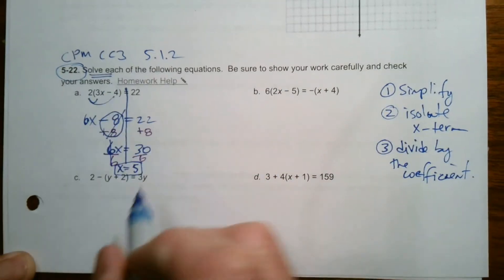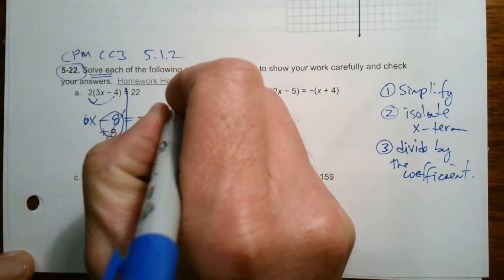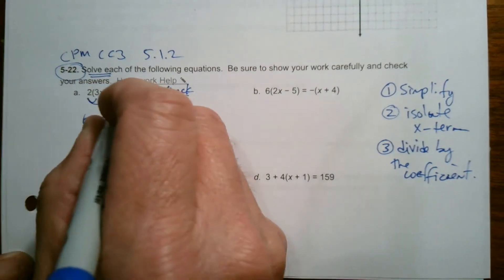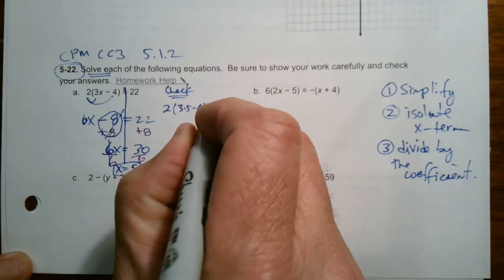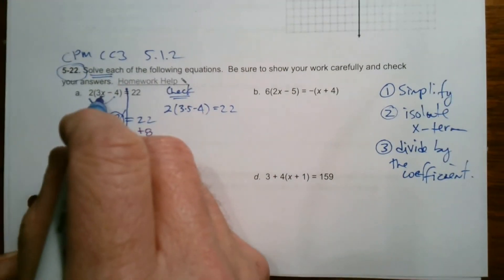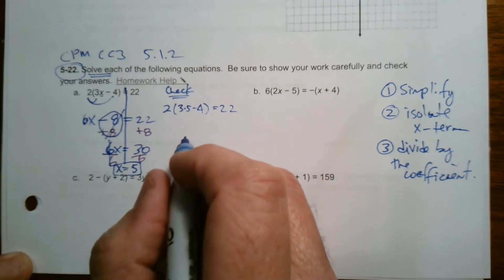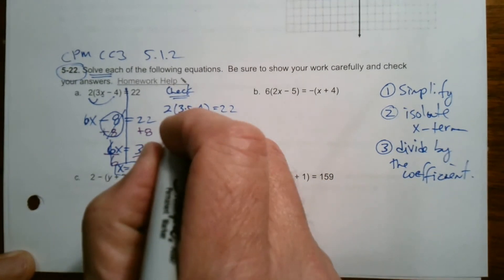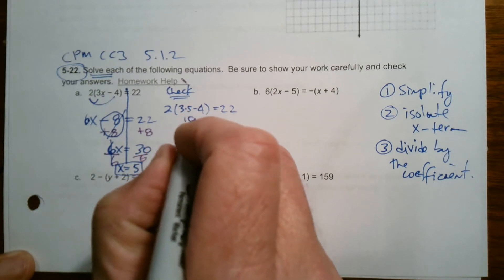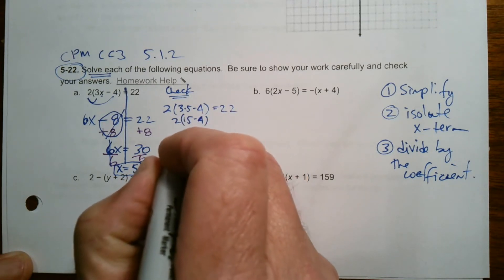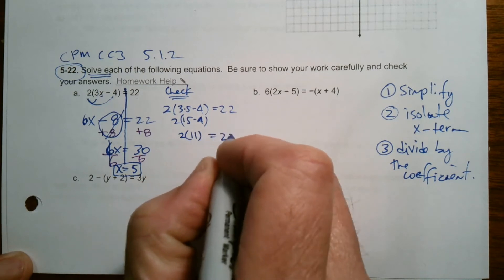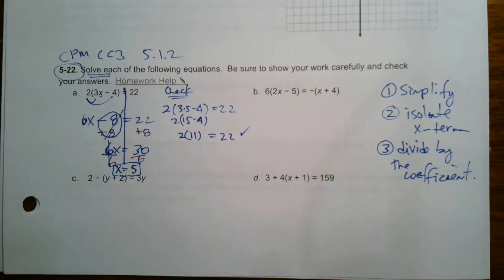But then they say check your answers. What does that mean to check it? Checking it means plug your answer back into the original equation to see if it's true. So does two times the quantity three times five minus four equal 22? That's checking it. I'm going to take that five, plug it in, and then do the math to see, use order of operations to see if it's true. So order of operations tell me to multiply three times five first, so I get 15 minus four. And then inside the parentheses I still got to do the 15 minus four before I multiply. 15 minus four is 11, so now I have two times 11 which does equal 22. So it does check out. So that's the process of solving: simplify, isolate the X term, divide by the coefficient, then check to see if your answer is right.